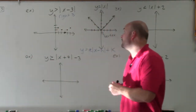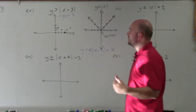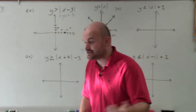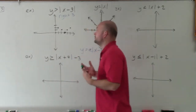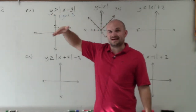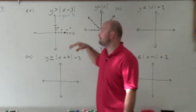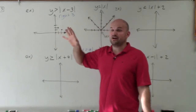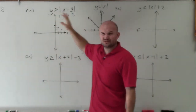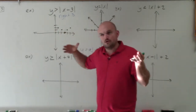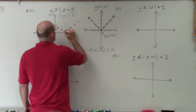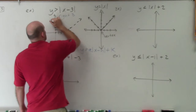The next thing I want to do is determine my boundary lines: is that going to be solid, or is that going to be dashed? Is it going to be a part of the solution or not? For linear inequalities, whenever we had a greater than or a less than, it was dashed — meaning the point was not a part of the line. I'm going to apply the same logic here: greater than or less than gives a dashed line.